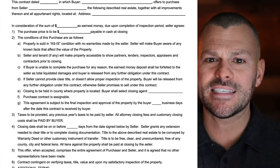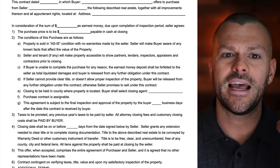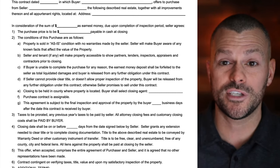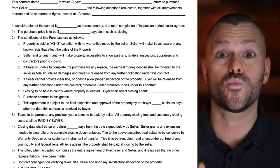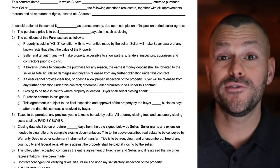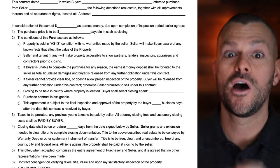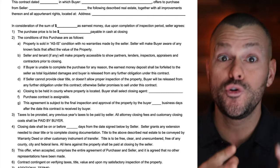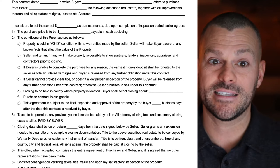The seller and tenant, if any, will make the property accessible to show partners, lenders, inspectors, appraisers, and contractors prior to closing. In order to wholesale a property, we need to get in and do some inspections. Our buyers are going to want to get in. If they're using financing, their bankers, appraisers, or inspectors are going to want to get in. So we need to have access to the property prior to closing — that's what condition B states.